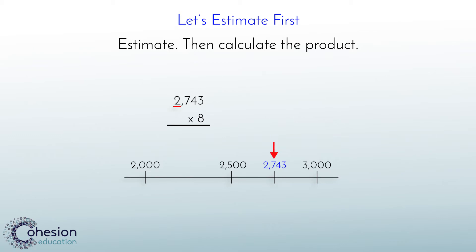Notice that 2,743 is sandwiched between 2,000 and 3,000. If we visualize this number on a number line, we can see that 2,743 is closer to 3,000. Therefore, we will round it to 3,000 and then multiply to get an estimate.